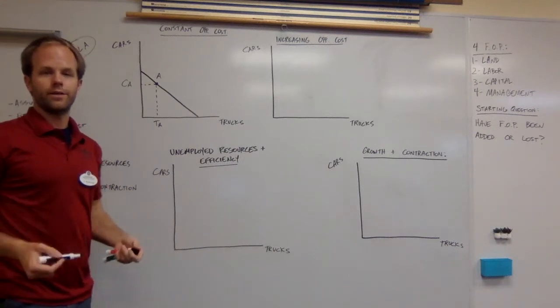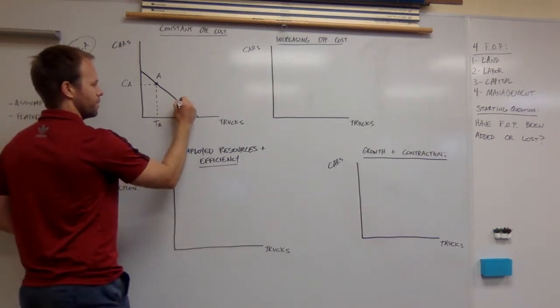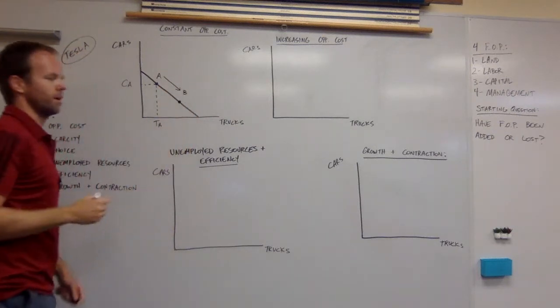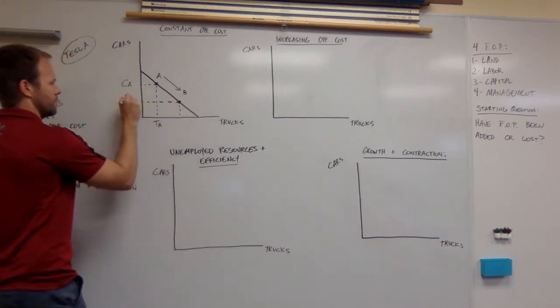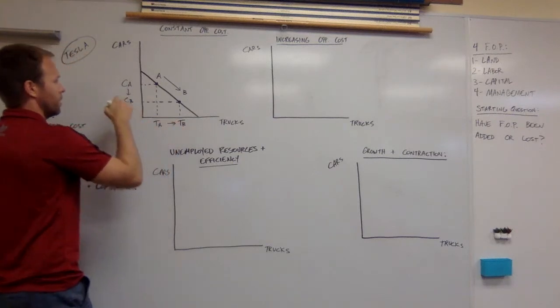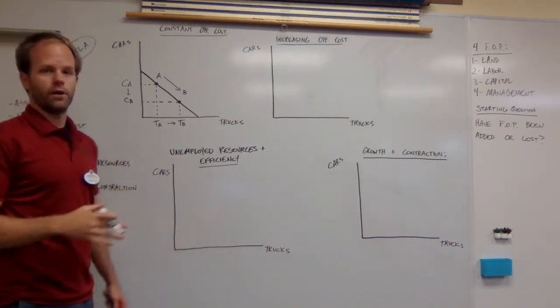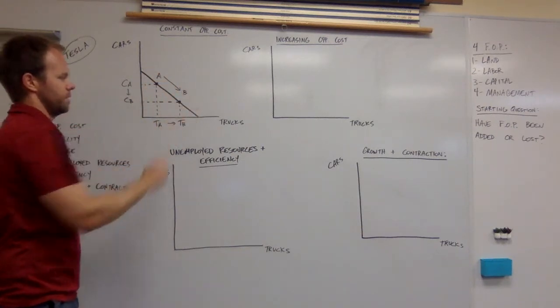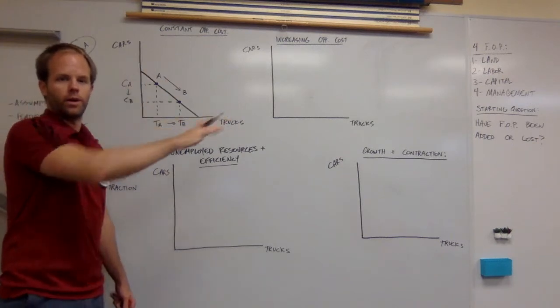Let's say Tesla wants to make more trucks. They could do that pretty simply. They would just have to repurpose the factors of production that they have. In this case, we're going to say they are shifting along our production possibility curve to point B. Again, we're going to label this CB and TB for the amount of cars produced at point B and the amount of trucks produced at point B.